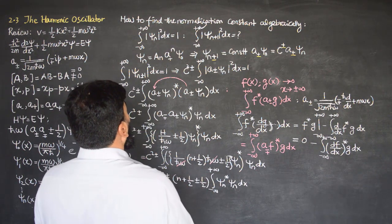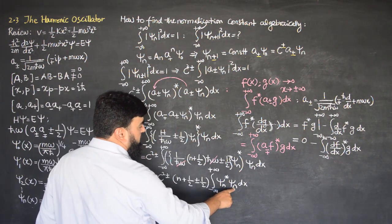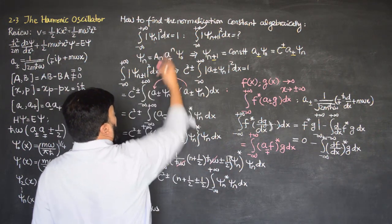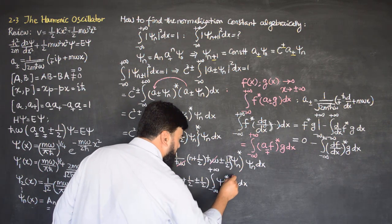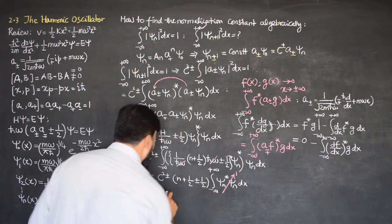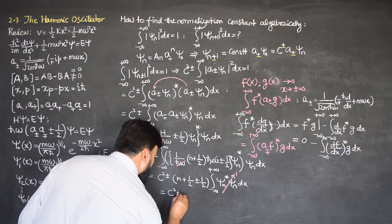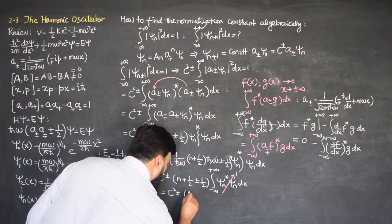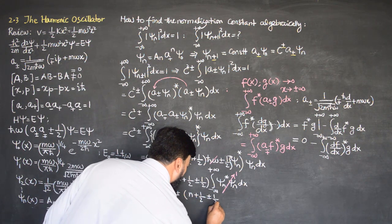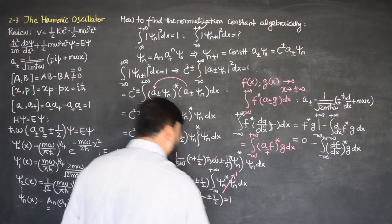The ℏω terms cancel, and we are left only with numbers. So this becomes (n + ½ ± ½) times the integral from minus infinity to plus infinity of ψn conjugate times ψn dx. Now, ψn conjugate times ψn is |ψn|², which equals 1 by normalization. So we are left with c²(n + ½ ± ½) = 1.